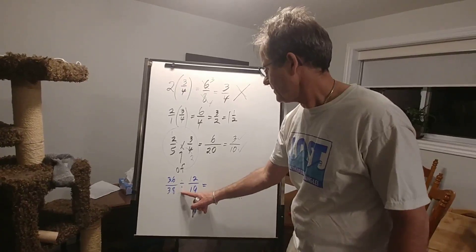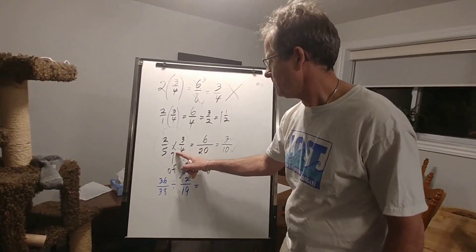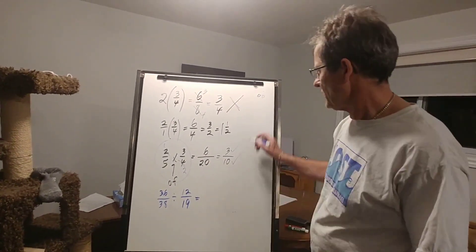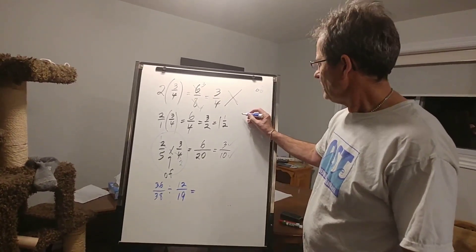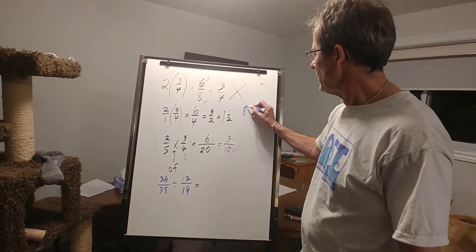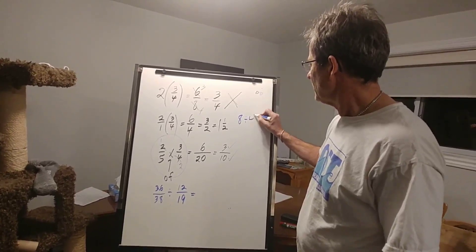But we don't want to have to divide if we can know how to multiply. So let me show you how we can divide in another way. Let's say I have 8 divided by 4.